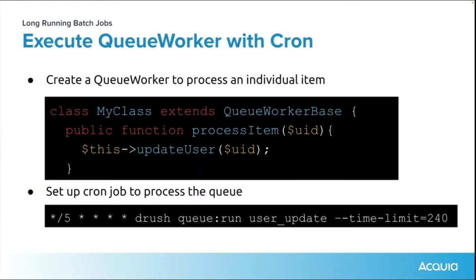The next thing you do is create what's called a queue worker. The update_user method inside it is actually identical to what you had in the anti-pattern. But what this does is it processes each item individually inside a single PHP process. Then you set up a cron job that says run any items sitting in my queue every five minutes. That job just runs every five minutes, picks items off the queue, and executes them one by one.